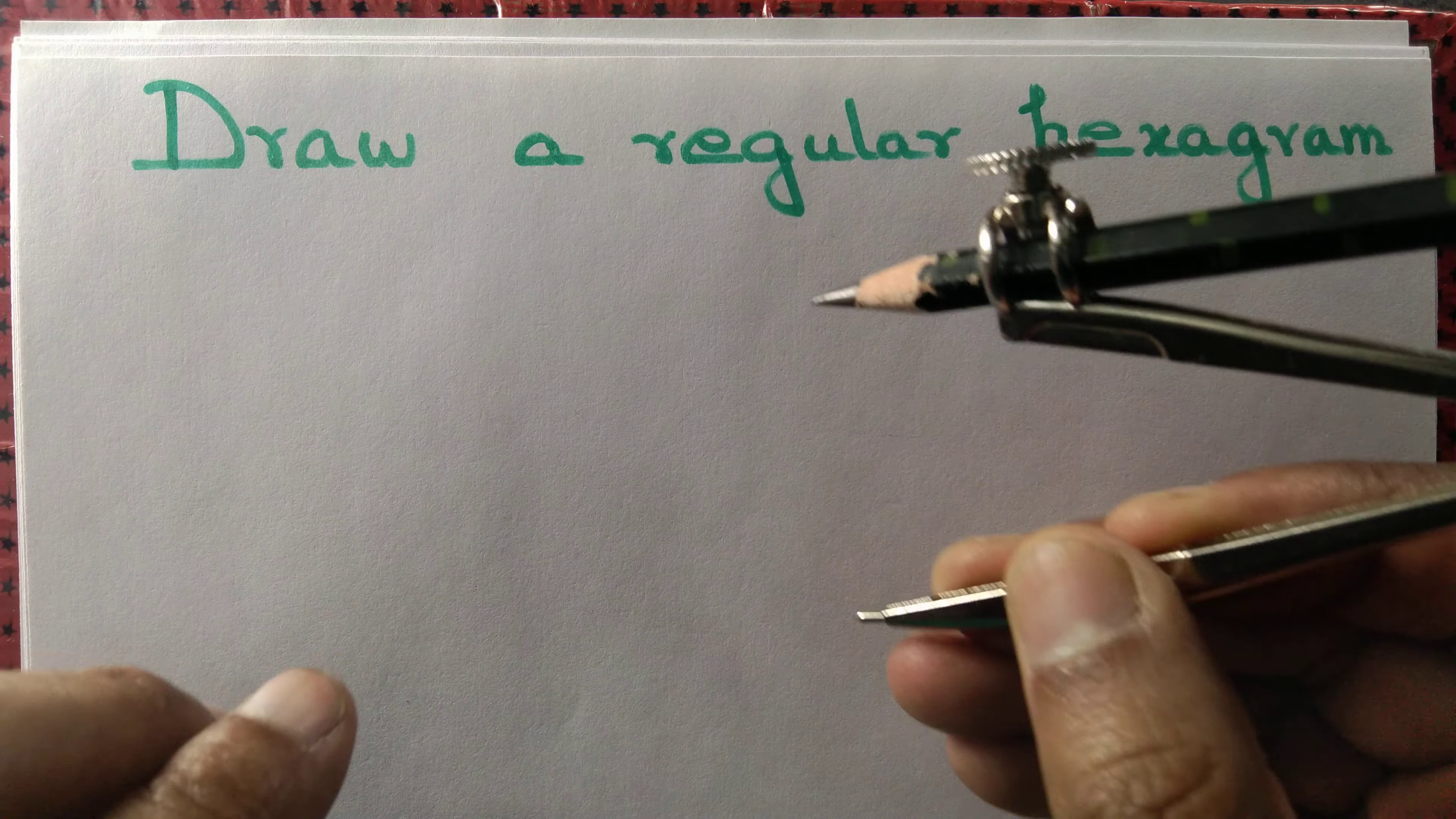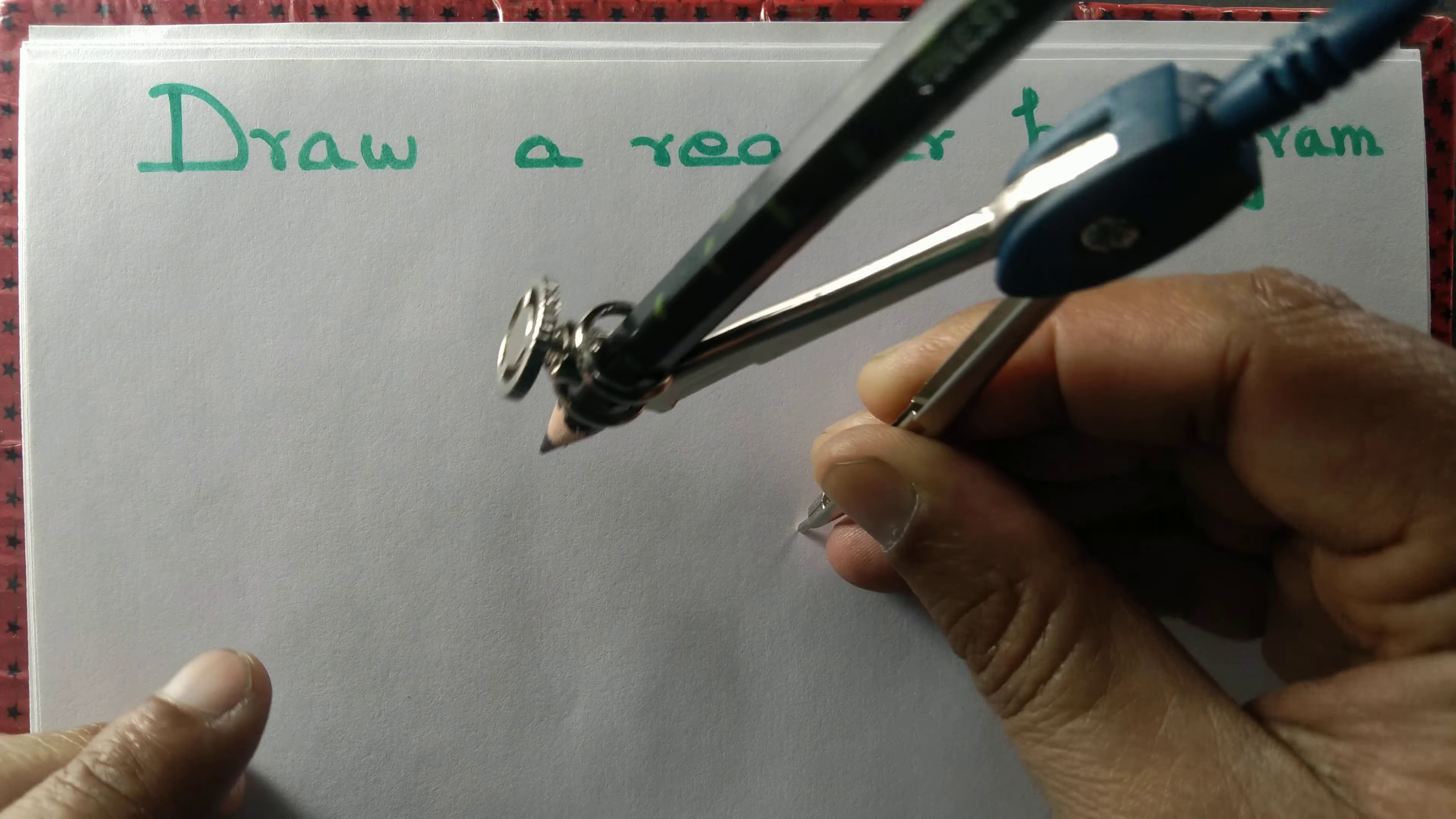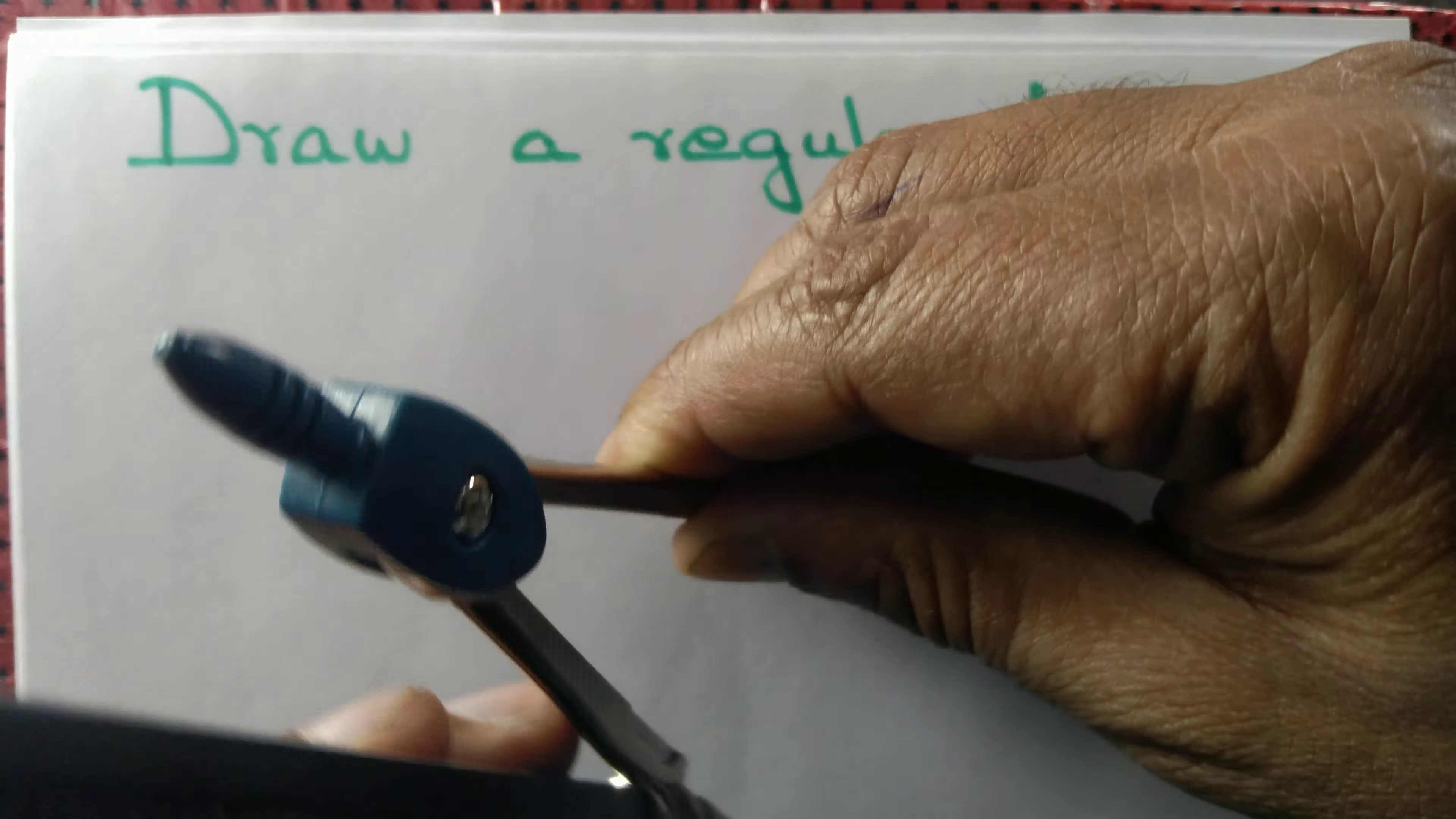Let us draw a regular hexagram. We start by drawing a circle.